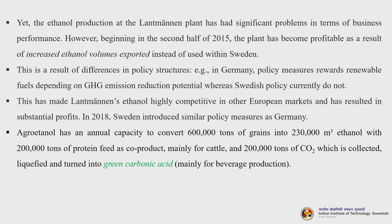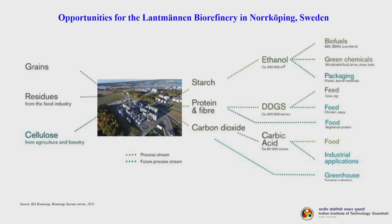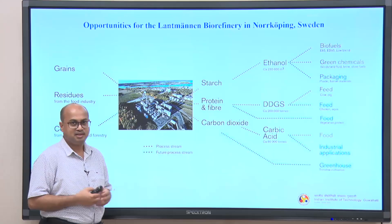In 2018, Sweden introduced similar policy measures as Germany. Agroethanol has an annual capacity to convert 600,000 tons of grains to 230,000 cubic metres of ethanol, with 200,000 tons of protein feed as co-product (mainly for cattle) and 200,000 tons of carbon dioxide which is collected, liquefied and turned into green carbonic acid, mainly for beverage production. This is all about the Lantmännen biorefinery located at Norrköping in Sweden.